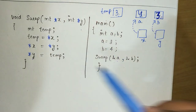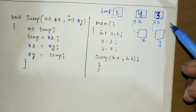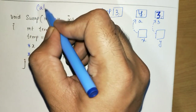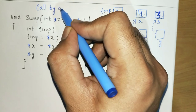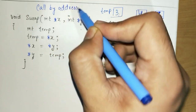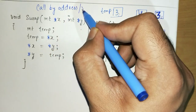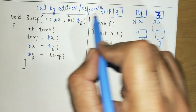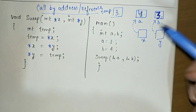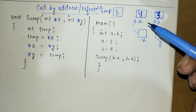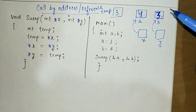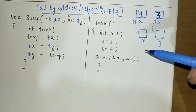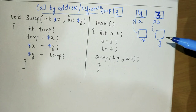This kind of function call is called call by address or call by reference, because we called the function using the address. The previous approach was called call by value. Generally, we use call by address to make programs work more efficiently and simply.